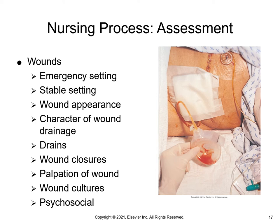The assessment includes the amount or percentage and appearance or color of viable and non-viable tissue. Granulation tissue is red, moist tissue composed of new blood vessels and indicates progression toward healing. Slough is yellow, soft, white stringy substance attached to the wound bed that must be removed before the wound can heal properly. Eschar is black, brown, tan, or necrotic tissue that also needs to be removed before healing can occur.